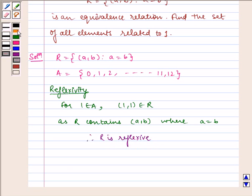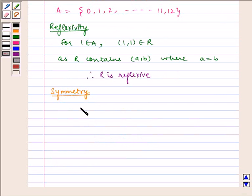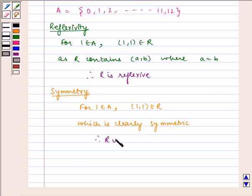Now let us check for symmetry. For 1 belongs to A, (1,1) belongs to R which is clearly symmetric. Therefore, R is symmetric.